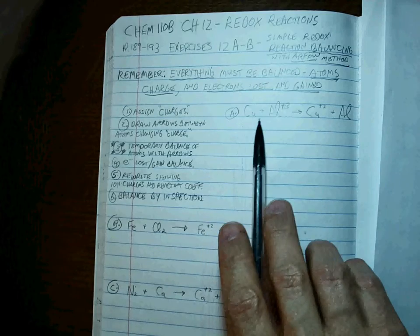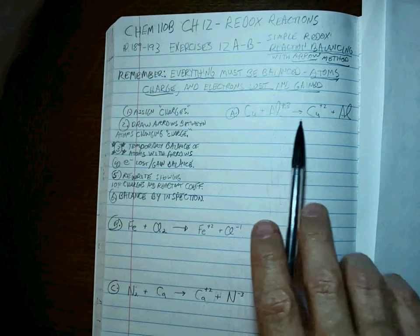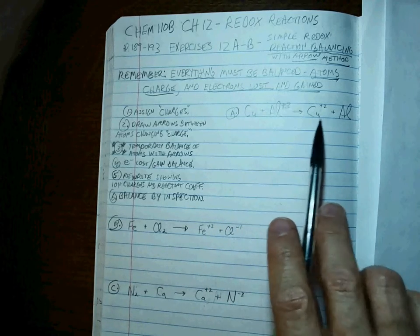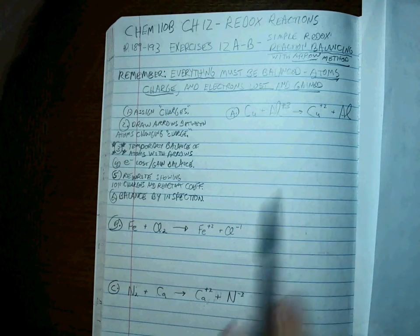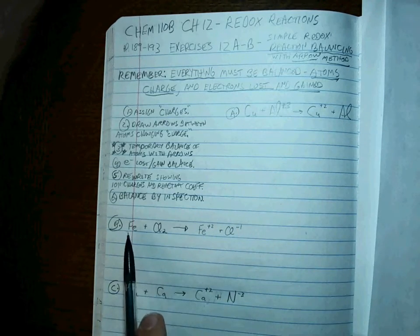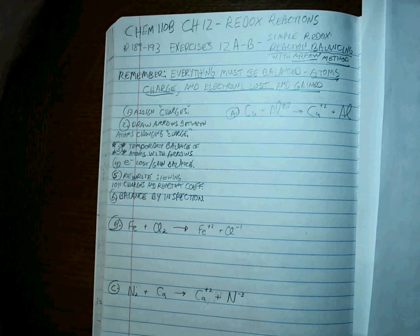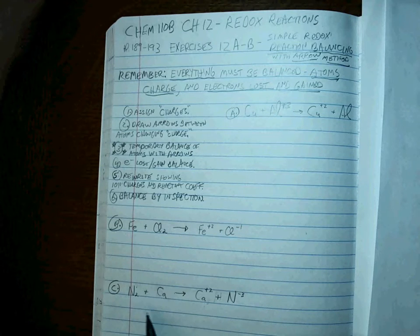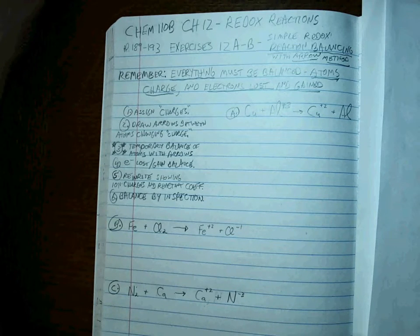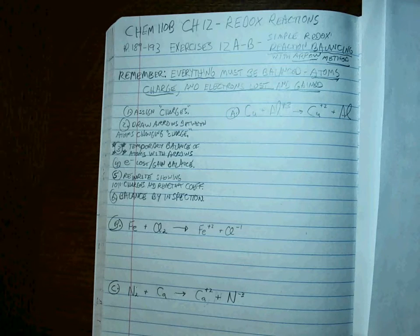Problem A: Cu⁰ plus Al³⁺ goes to Cu²⁺ plus Al. Problem B: Fe plus Cl₂ goes to Fe²⁺ plus Cl⁻. Problem C: N₂ plus Ca goes to Ca²⁺ plus N³⁻.